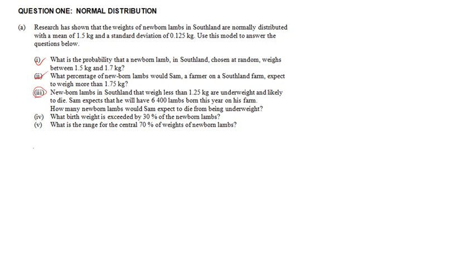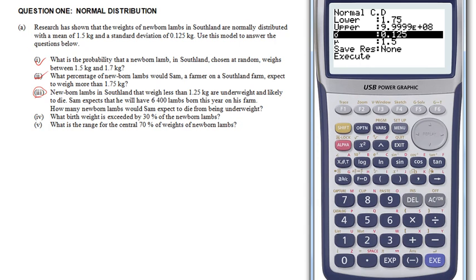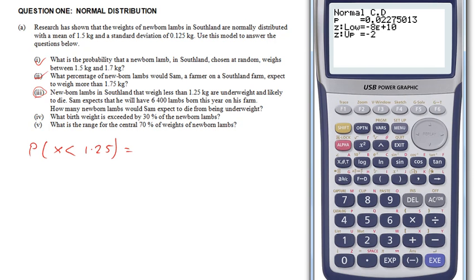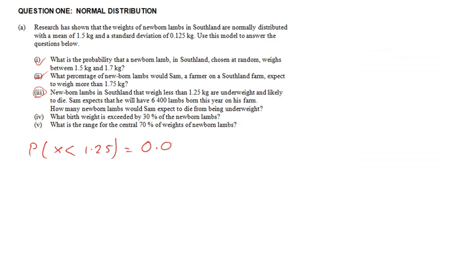I need to work out the probability that it's smaller than 1.25. So that means I've got 1.25 as my biggest value, and my smallest value has got to be something suitably small, so I'm going to change that being minus and then a very, very big number. And the probability that x is smaller than 1.25 is 0.02275.